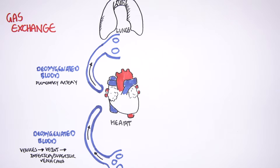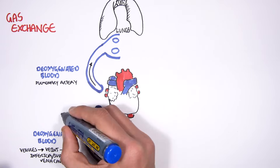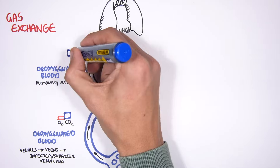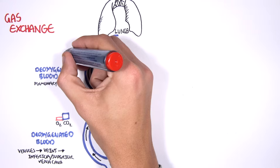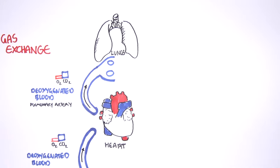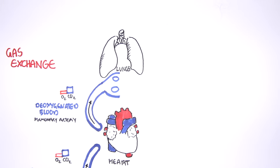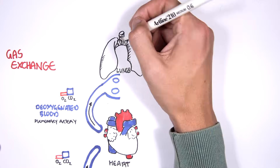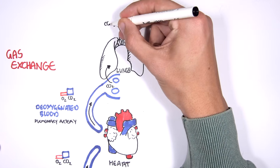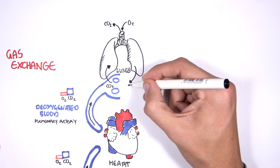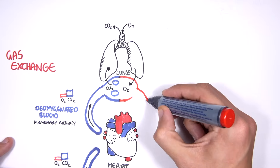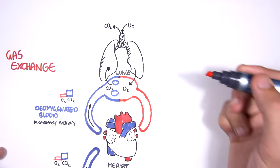So why is it called deoxygenated blood? It's because we have a higher concentration — or more properly, a higher partial pressure — of carbon dioxide compared to oxygen. That is why they are deoxygenated. As the deoxygenated blood enters the lungs, the blood will offload the carbon dioxide, and then the lungs will re-oxygenate the blood, putting more oxygen into the blood, forming oxygenated blood.